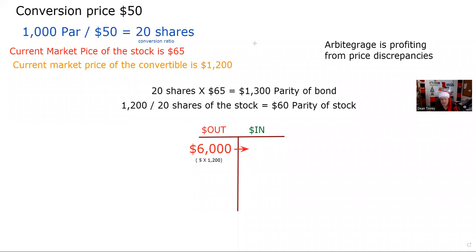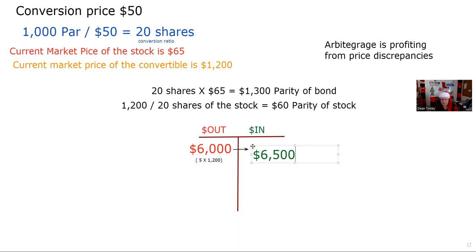What I should do now is turn the bonds into the stock. If I have five bonds and each converts into 20 shares, I now have the ability to get 100 shares of the stock. So I'll sell 100 shares at the current price of $65, and I'm going to make delivery through converting. That's the selling of the 100 shares at $65. Note: we made $500 from this price discrepancy.